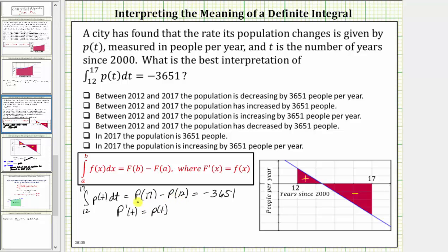And therefore, if we evaluate the population function at 17, and then at 12, and then find the difference, this does give us the change in the population over the time period from t equals 12 to t equals 17, which we know is negative 3,651 people, or a decrease of 3,651 people between the years 2012 and 2017.